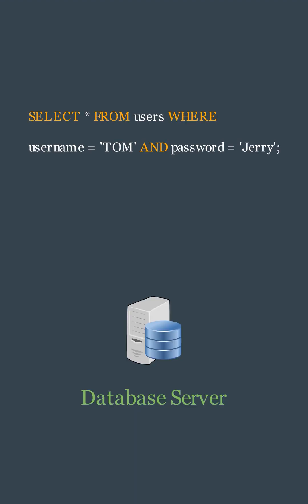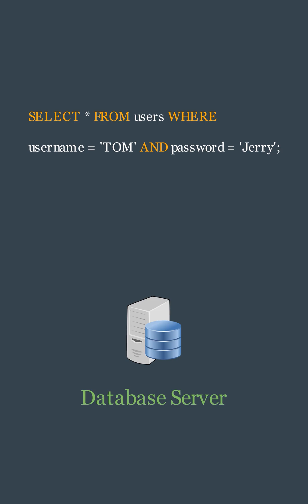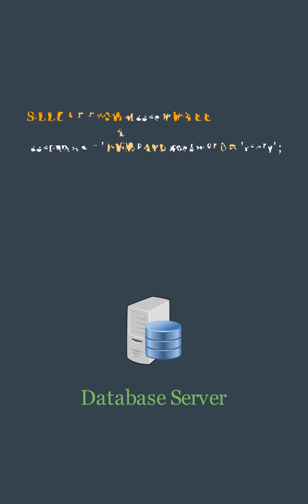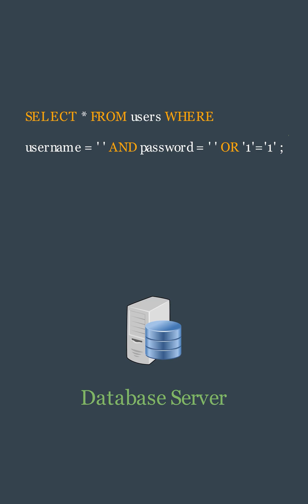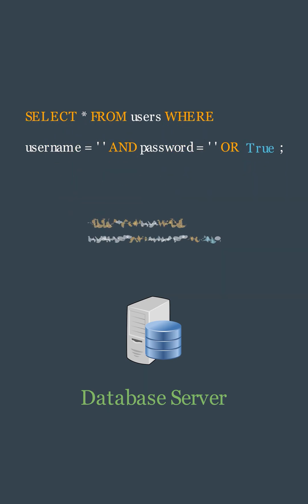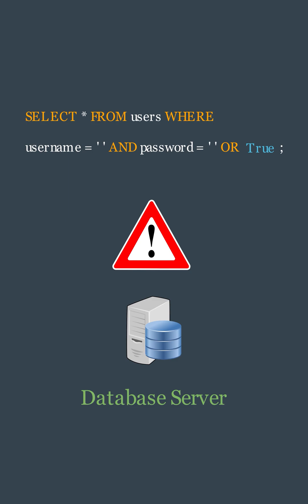The query instructs the database management system to fetch data from the database table where the username is Tom and the password is Jerry. The attacker might modify this to something where the query becomes: if the username and password OR a condition which is always true — this makes the whole condition true, and the query will return all rows of the table, effectively bypassing the password check and allowing the attacker to log in without a valid password.